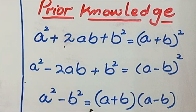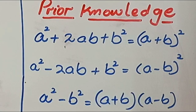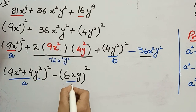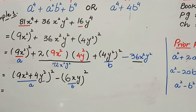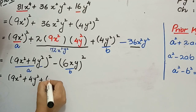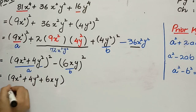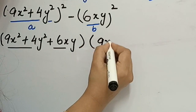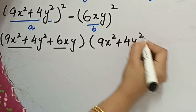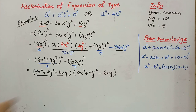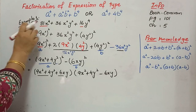As we know, a² − b² = (a + b)(a − b). Consider (9x² + 4y²) as 'a' and 6xy as 'b'. So it will be (9x² + 4y² + 6xy)(9x² + 4y² − 6xy). That's all for Example 1.